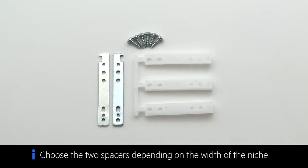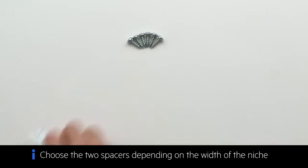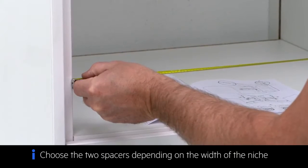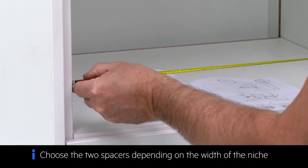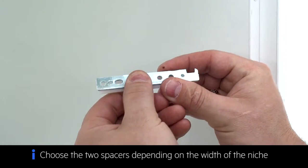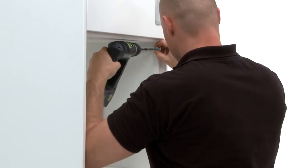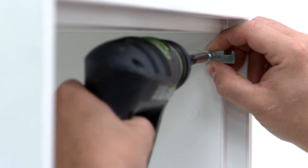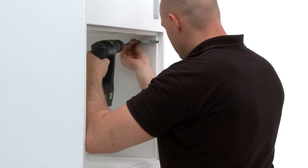For the next step, you will need the two spacers and two hooks provided. Use a left and right spacer. Fix the two spacers and two hooks into place, one on the left-hand side and one on the right.